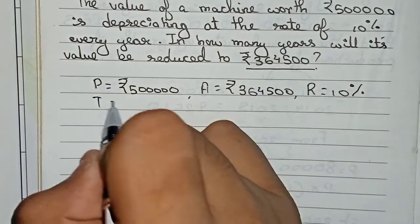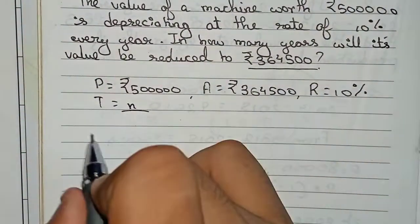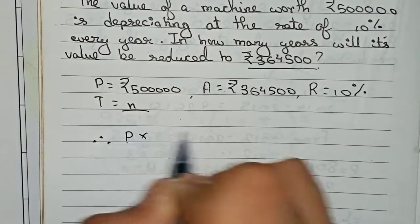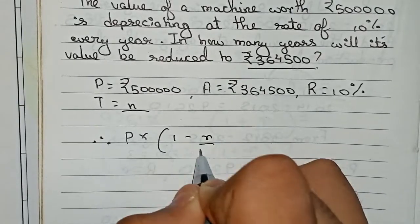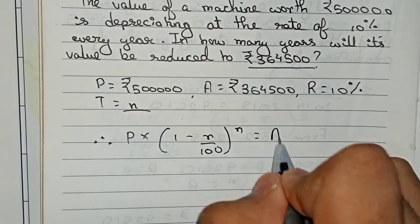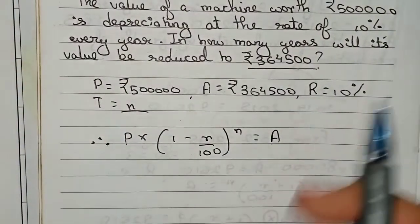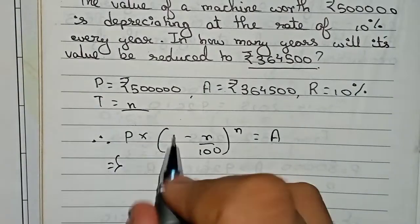Now we write down our formula: principal times (1 minus r/100) to the power n equals the amount. As the value is depreciating, we take minus instead of plus. Now I'll put down our values.